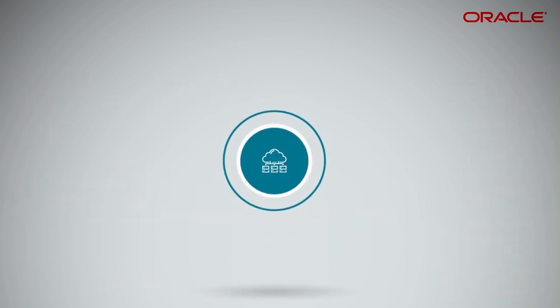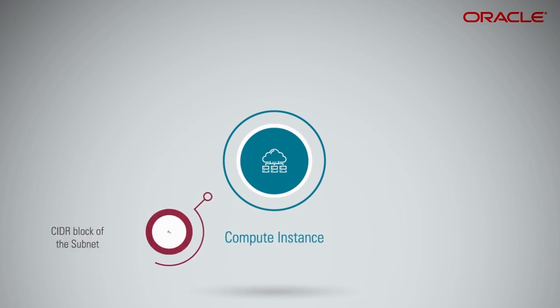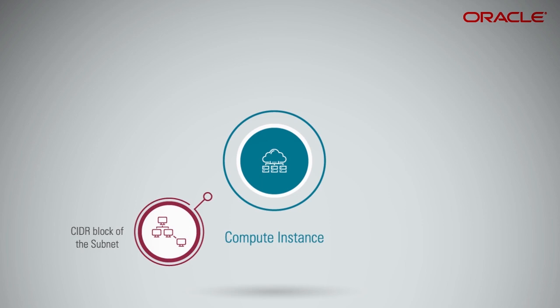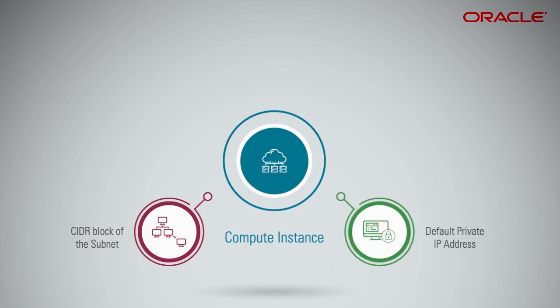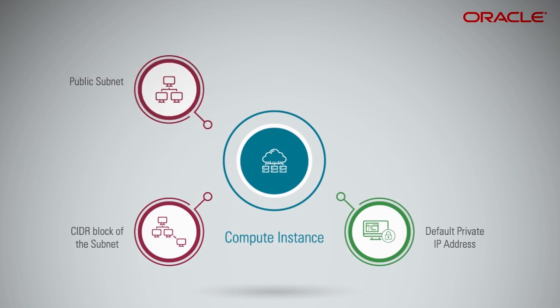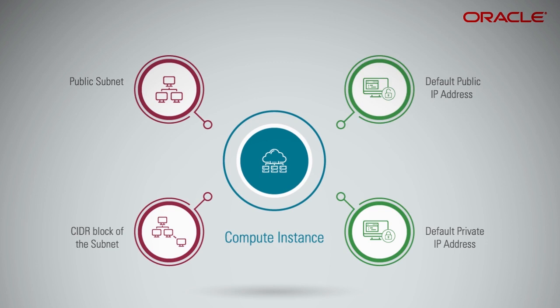Private IP address: every compute instance is assigned a private IP address from the CIDR block of the subnet the instance is launched in. Optionally, you can specify a particular private IP address of your choice from the subnet's available pool. Public IP address: if your compute instance is created in a public subnet, it will be assigned a public, internet routable IP address by default. You can override that behavior during instance launch and request to have no public IP address assigned.